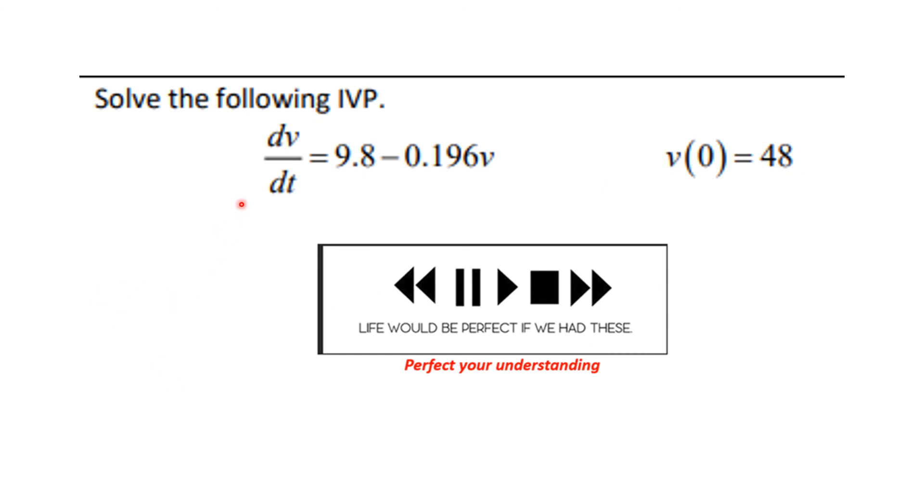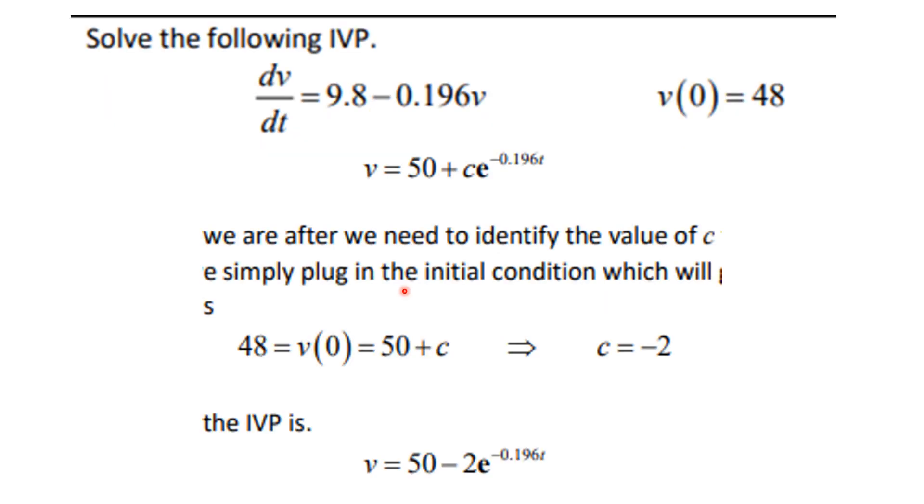Let's solve this initial value problem then. Let's see how you did. Well, this is really what we solved before, but we can use the initial condition to find out what c is. And so, c has to be minus 2. So, at the end of this problem, we find out v equals 50 minus 2 e to the minus 0.196t. See you in chapter 7.1.